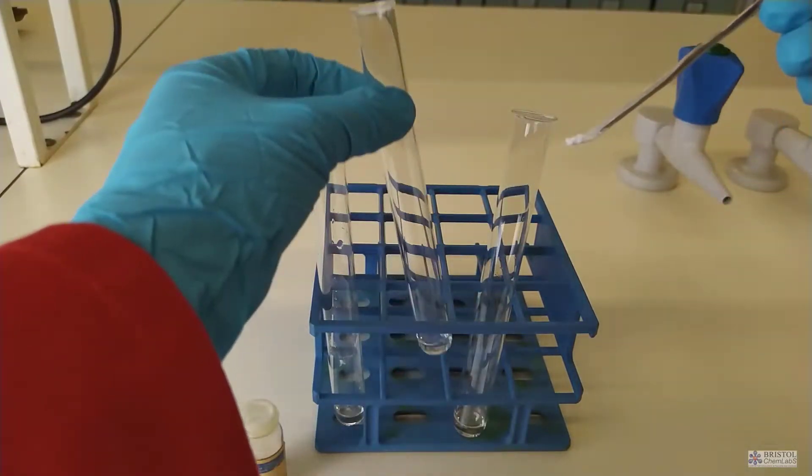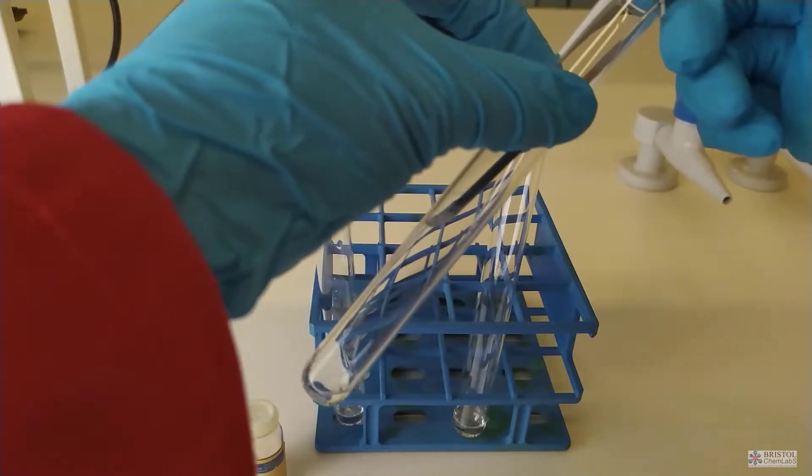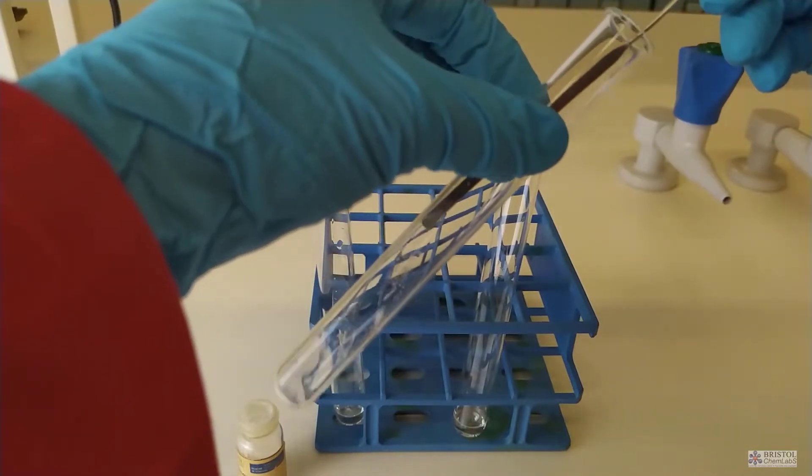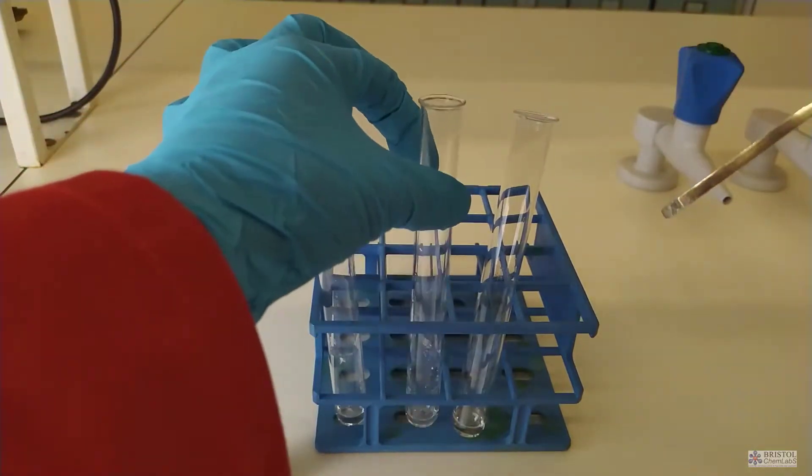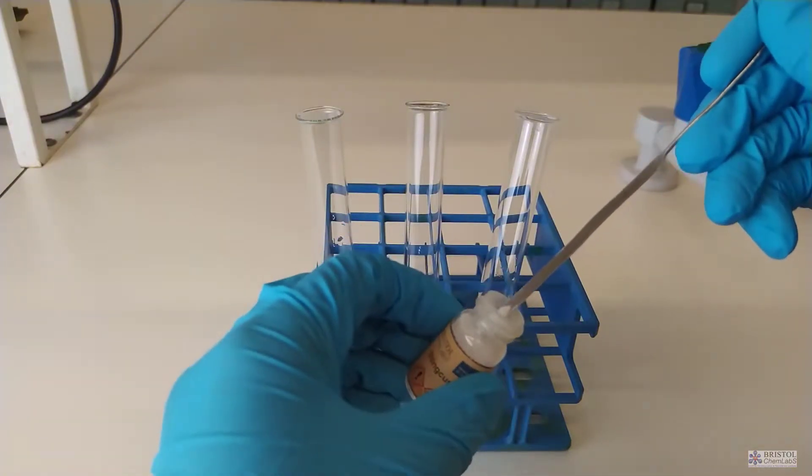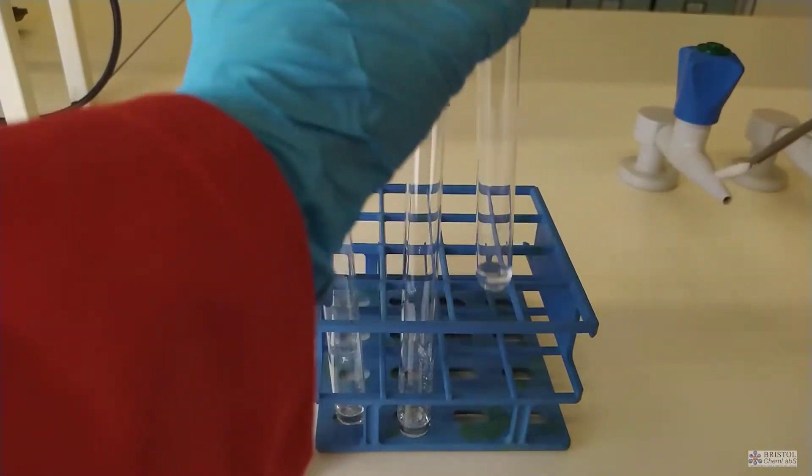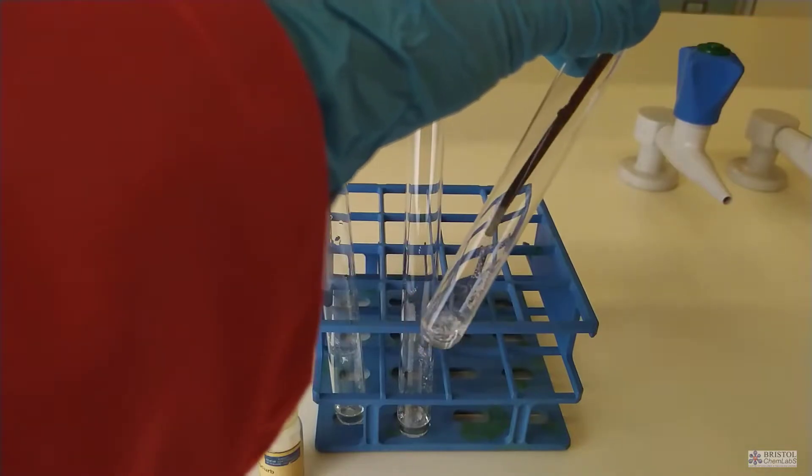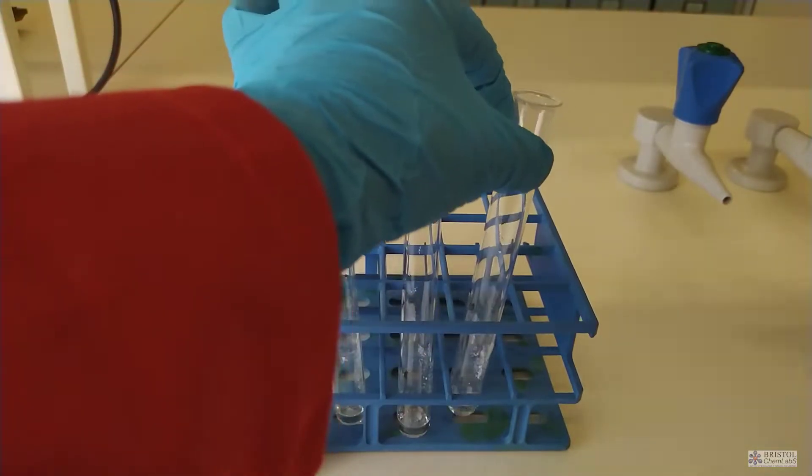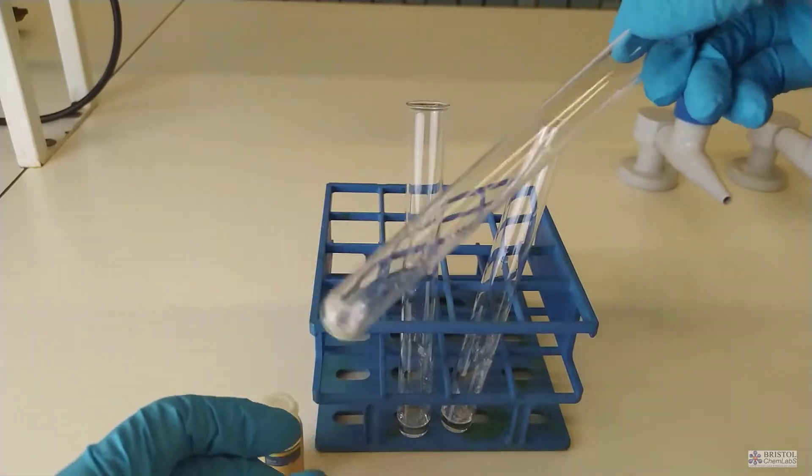So the first thing to do is dissolve a small amount of our mixture in a suitable solvent and shake until it is dissolved. If you add some iron-3-chloride solution to a phenol-containing molecule, you'll get a purple coloration due to complex ion formation.